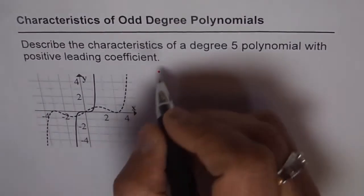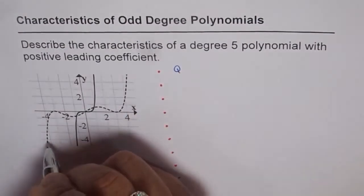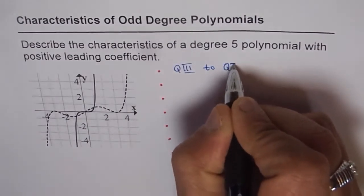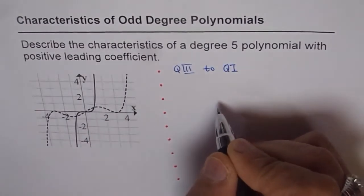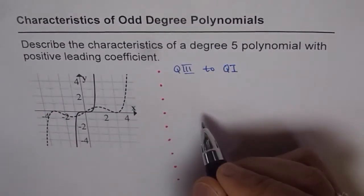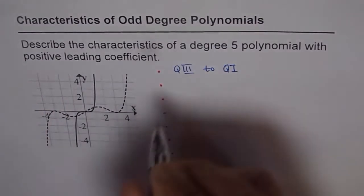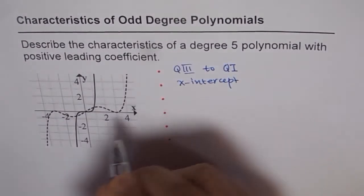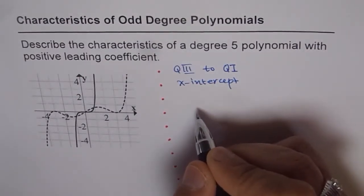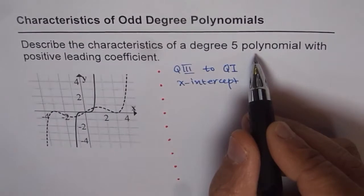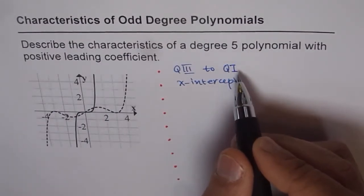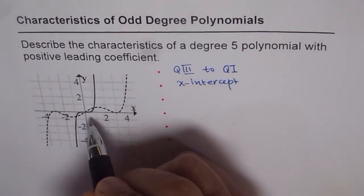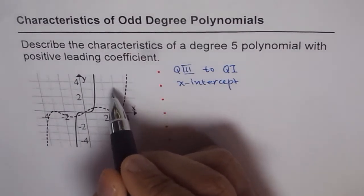As the graph moves from quadrant 3 to quadrant 1, it has to cross the x-axis, so it will definitely have an x-intercept. This means it is not possible for a degree 5 polynomial to have all imaginary roots. A degree 6 polynomial, by contrast, could go from quadrant 2 to quadrant 1 without crossing the x-axis, so it could have all imaginary roots — no real roots.